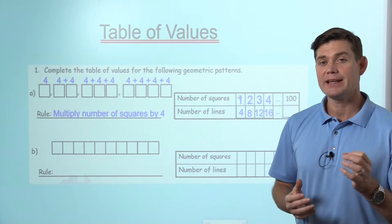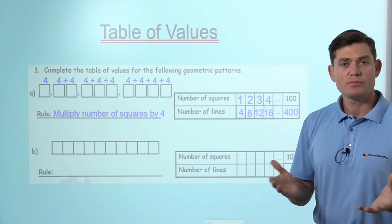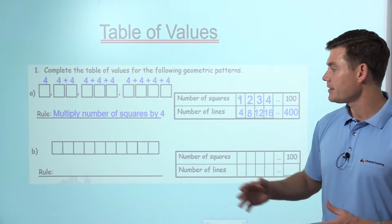And you might be saying, well, that's simple. But then it helps us when it comes to saying, how many lines would be there if we had 100 squares? Well, 100 times four would be 400. Pretty straightforward. If only all geometric patterns were that simple.